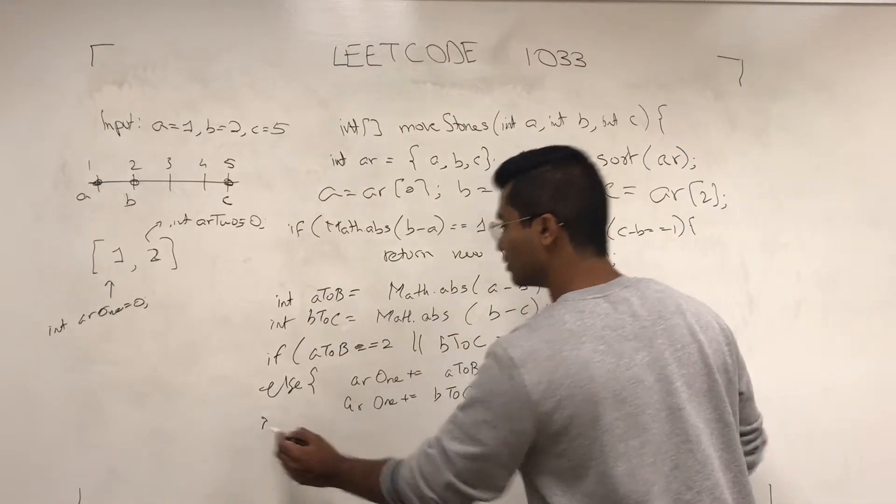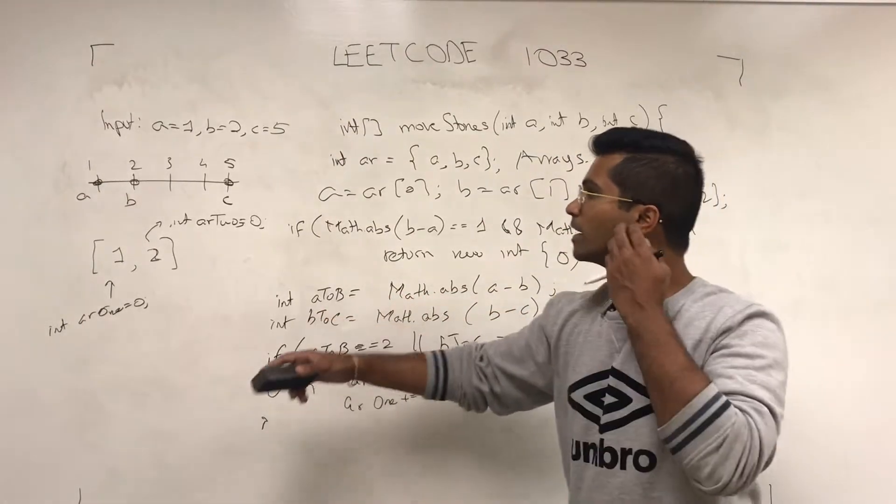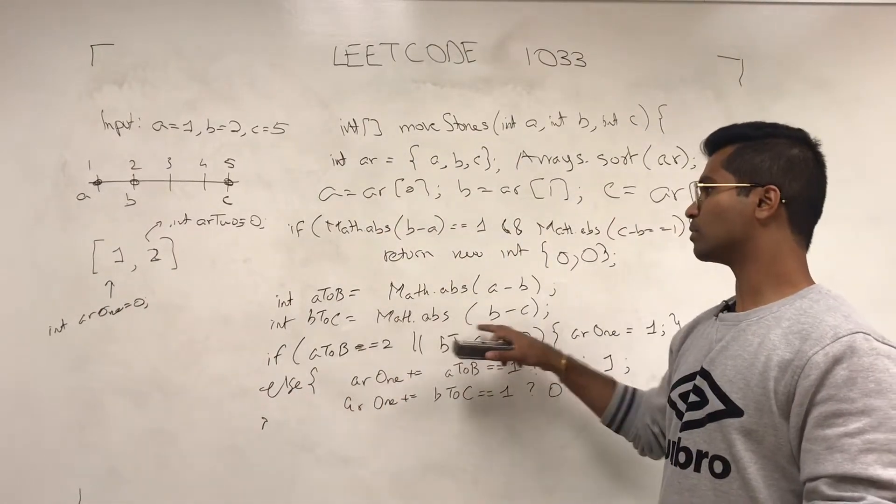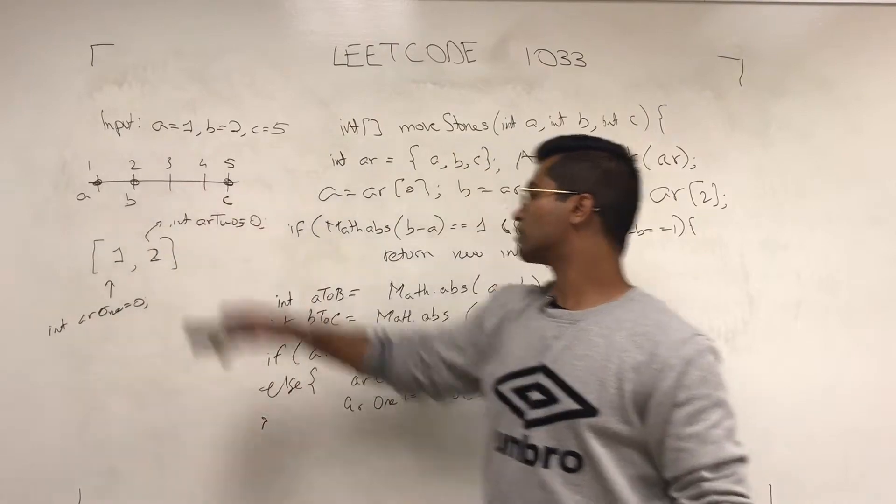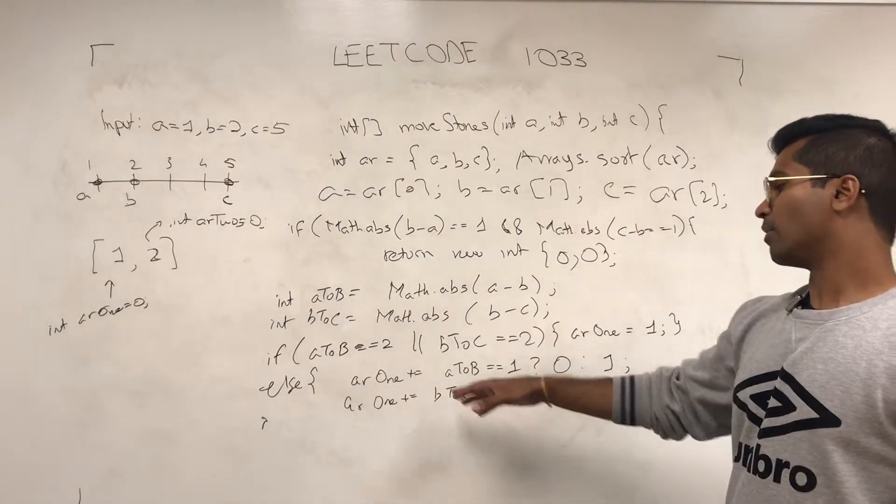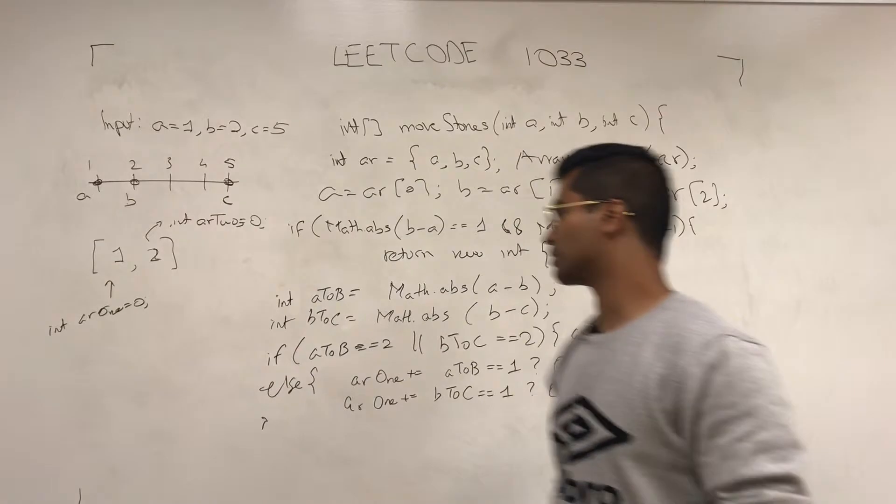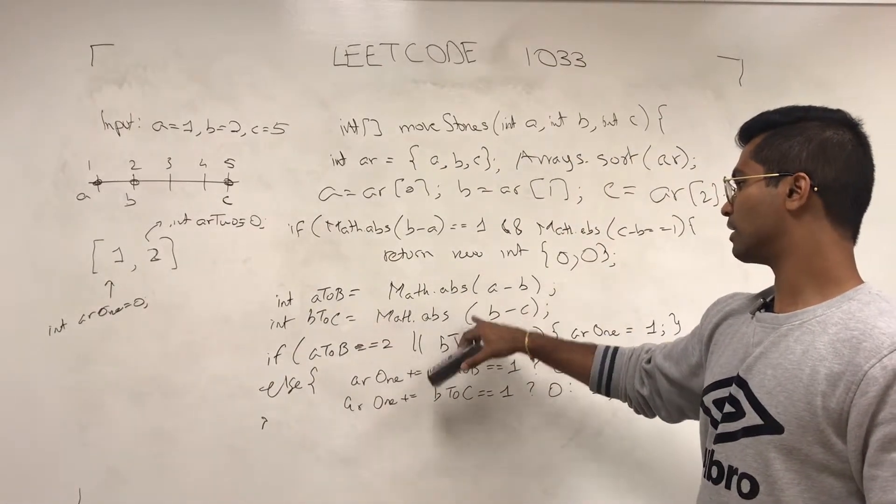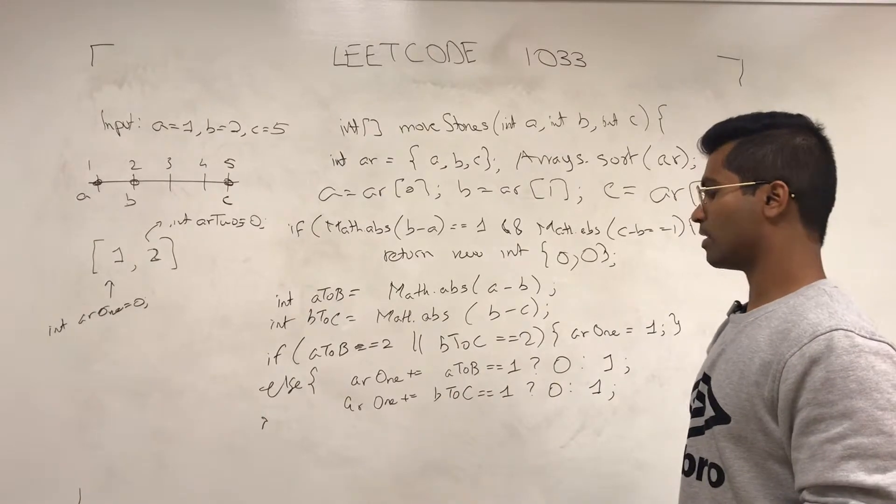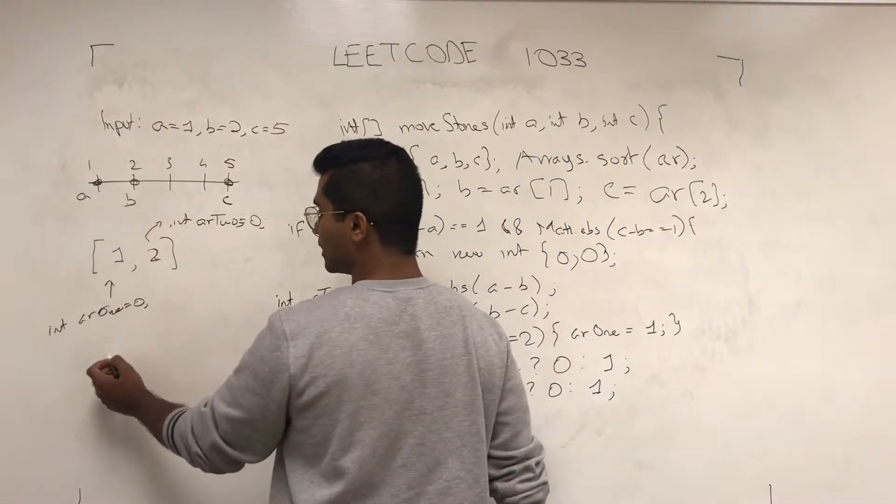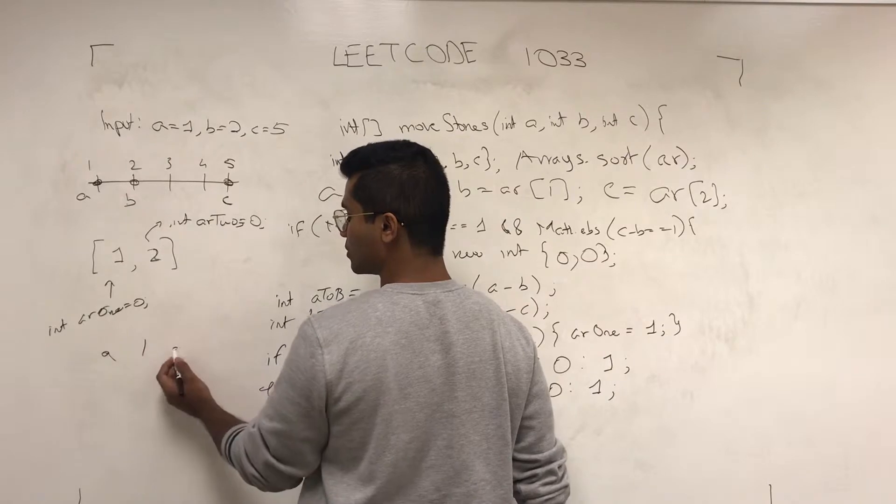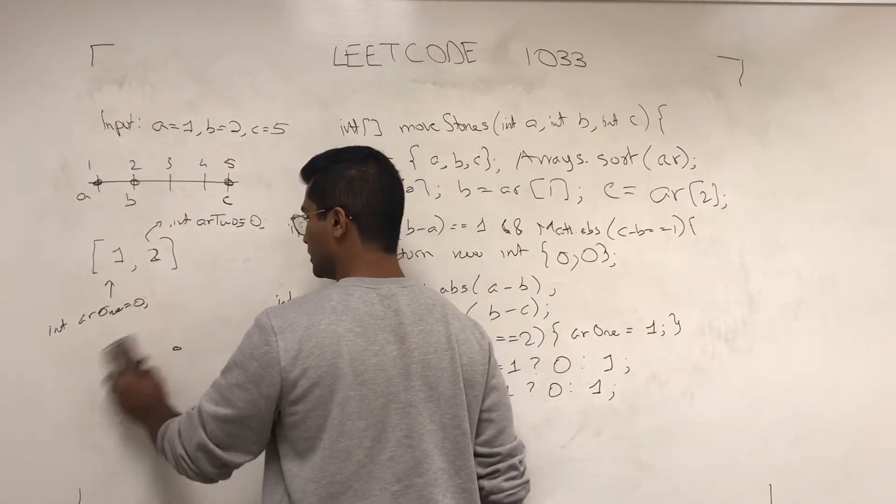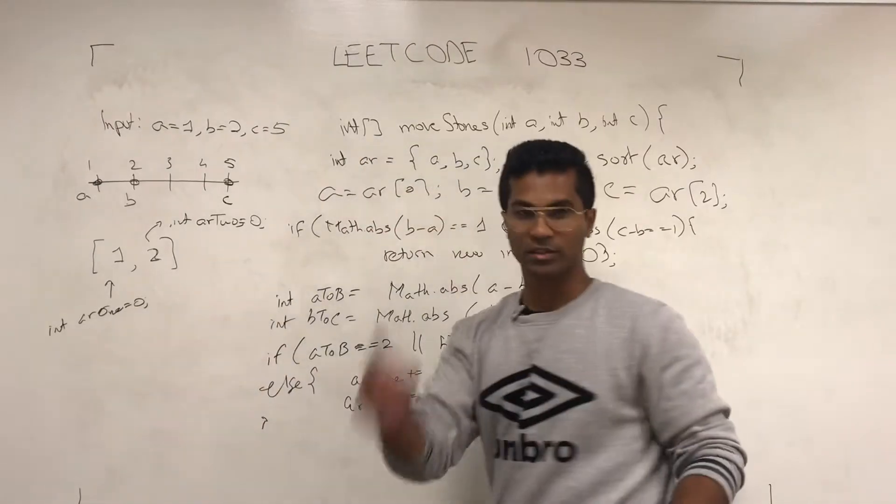Now I'm going to tell you what this means in a second. So first, this guy is the distance between these two, that's 1 in this case. The distance between these two is 3. Now AR1 is the minimum that we're going to return in the resulting array. If either one of these is 2, meaning there's a distance of 2 between two stones, the third one can just be put there and that would be 1. So the minimum of AR1 is just going to be 1.